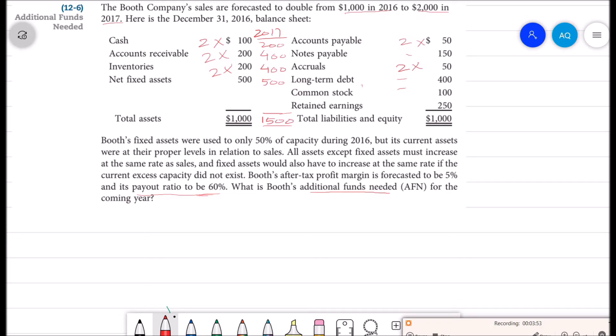Accounts payable will become $100. Then accruals will be $100. Then $400, then $100. Now we have to think about the retained earnings.